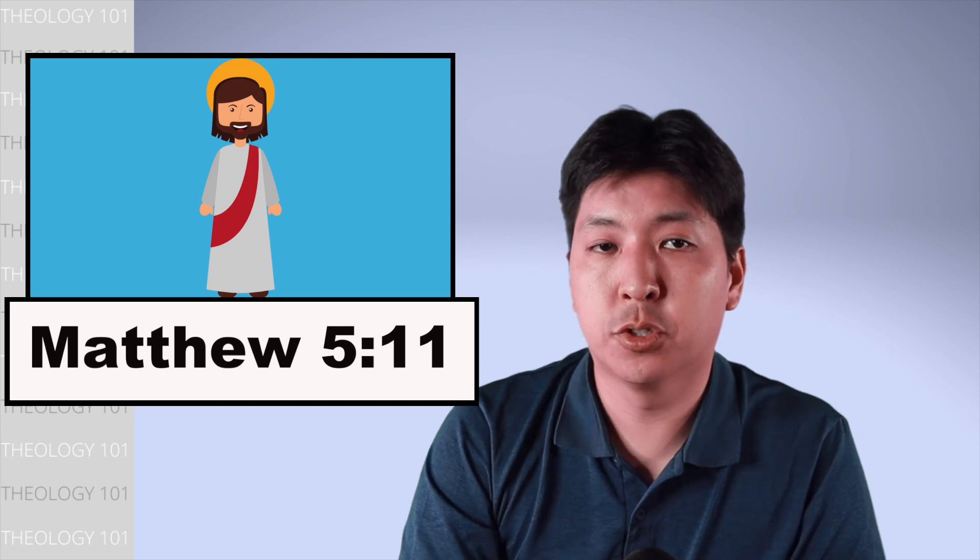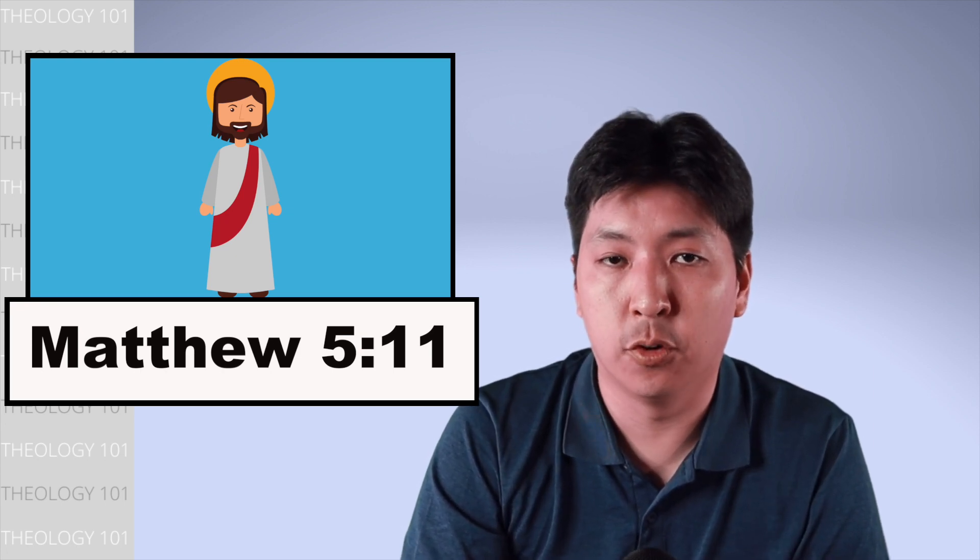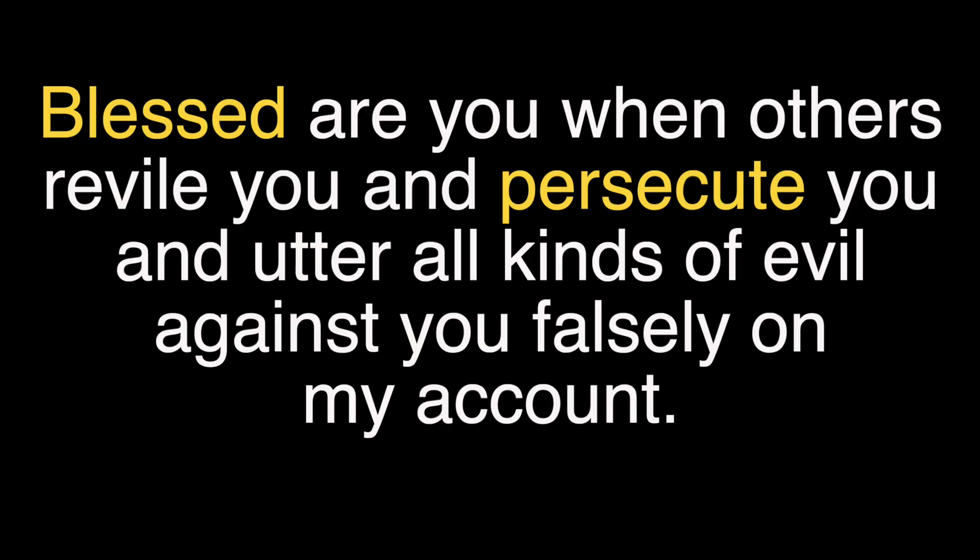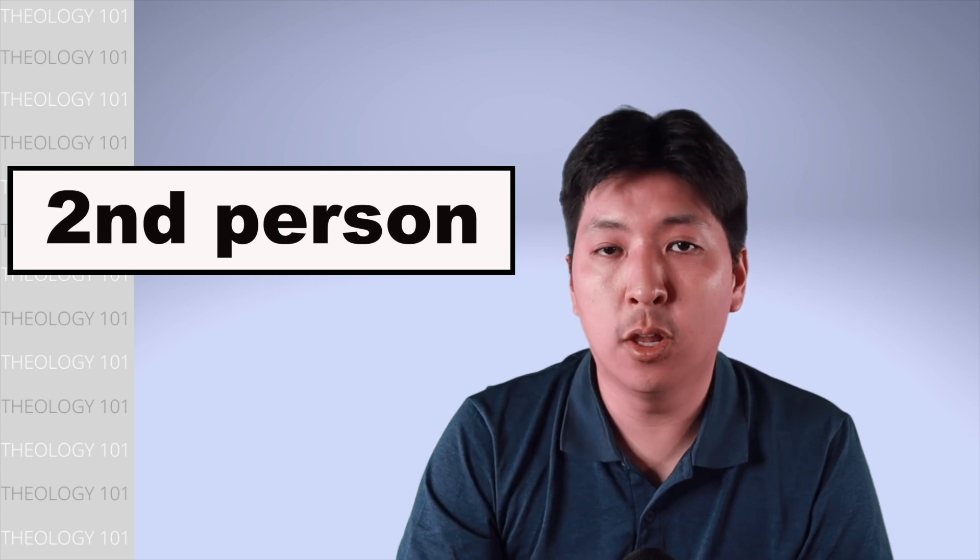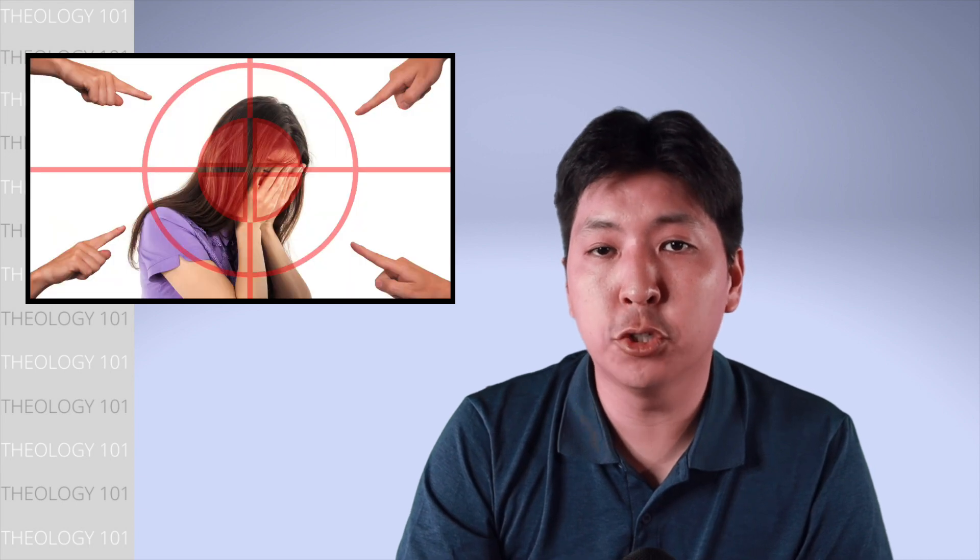Jesus cares for his disciples so much that he expands on this beatitude and personalizes it for them. Blessed are you when others revile you and persecute you and utter all kinds of evil against you falsely on my account. Verses 11-12 switches from the third person to second. He is no longer speaking about people, but about them. And he says that they are blessed even when others revile them and persecute them. But I want to highlight a key phrase: falsely on my account.